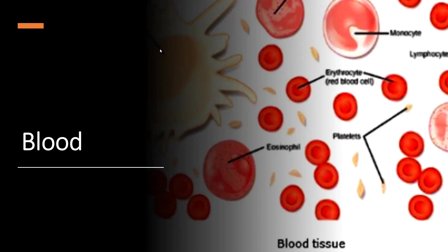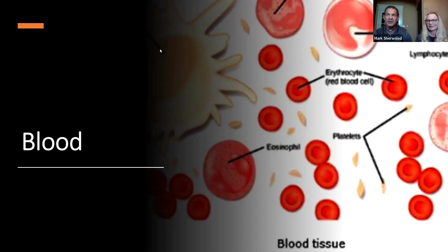The red blood cells are called erythrocytes, and the white blood cells are called leukocytes. When you think about erythrocytes, think red blood cells carrying oxygen; leukocytes or white blood cells are fighting your disease — like your military. Blood also has multiple functions that we'll talk about in just a second.